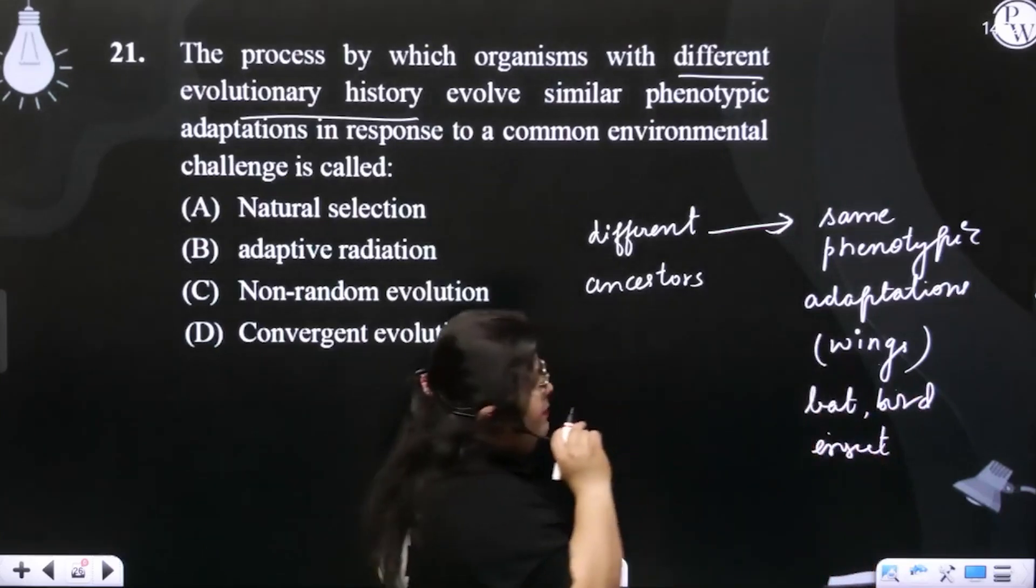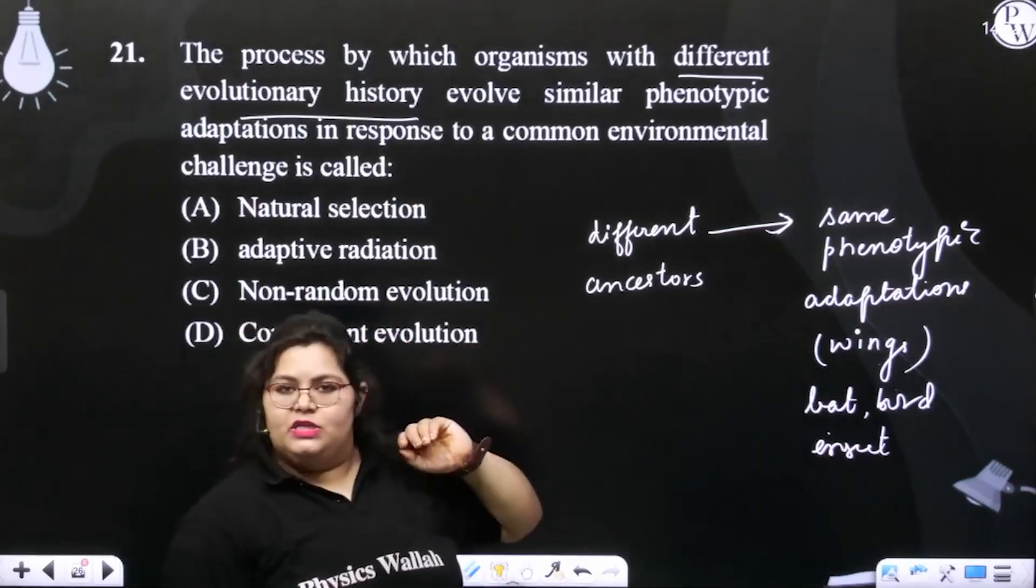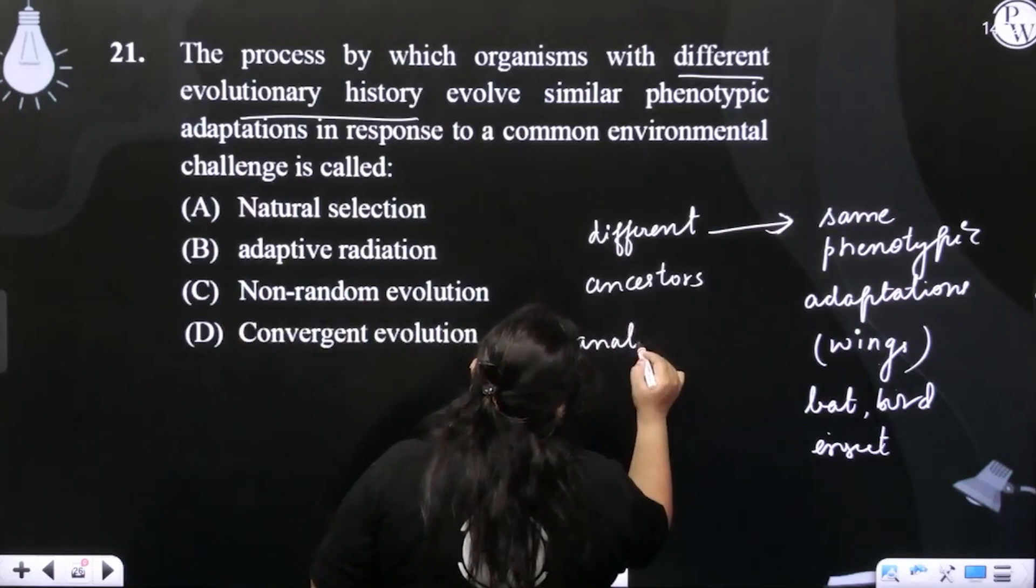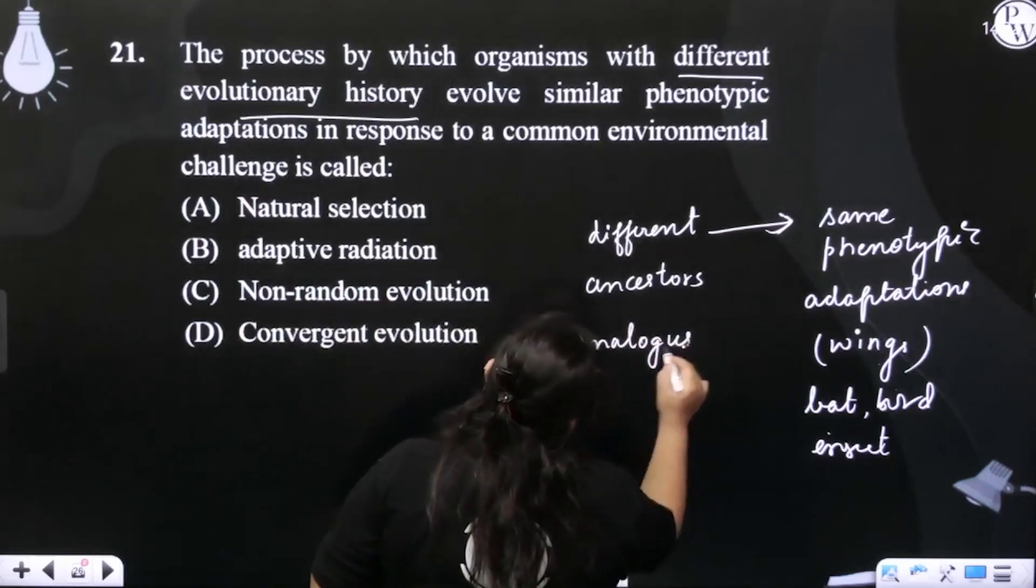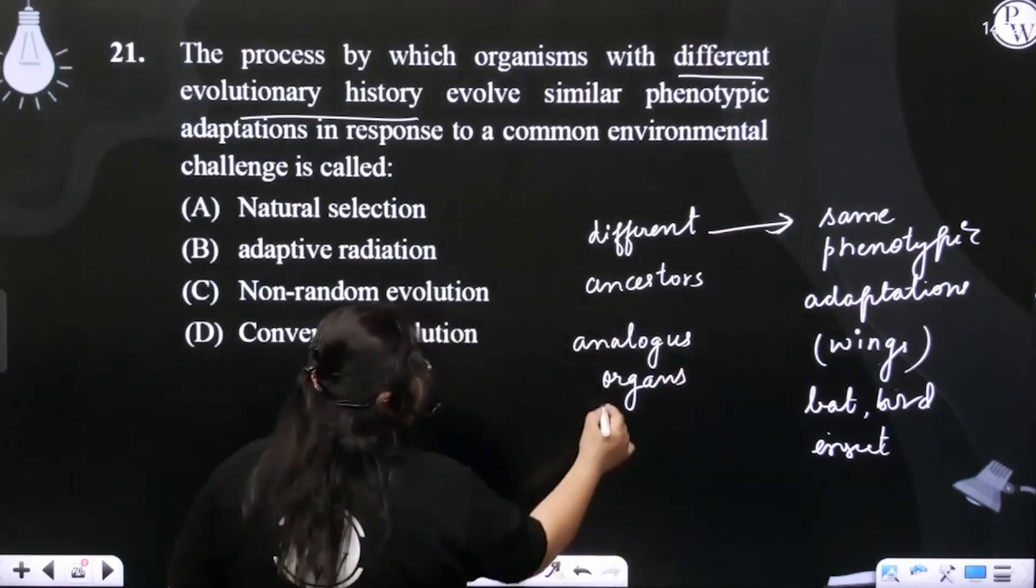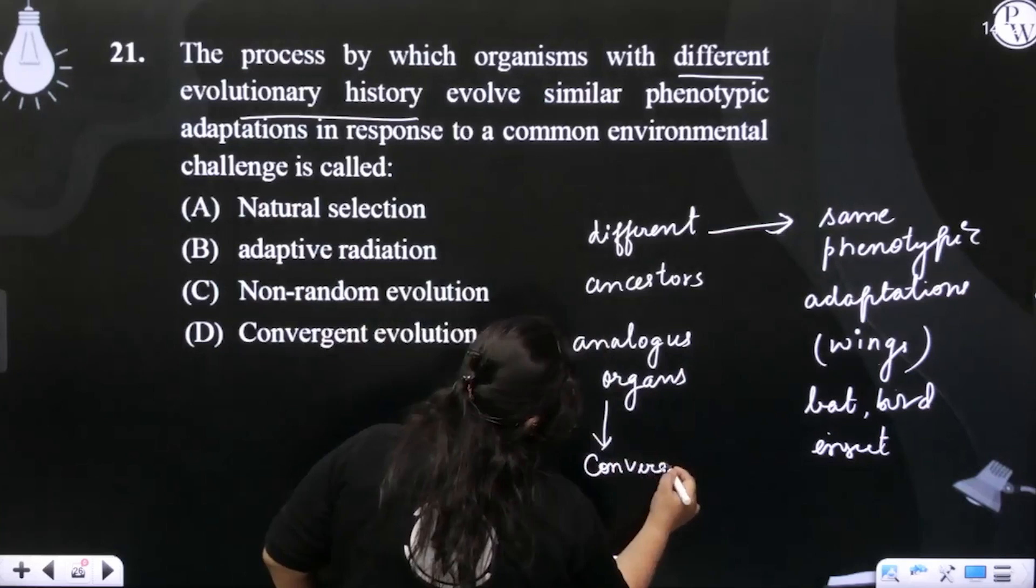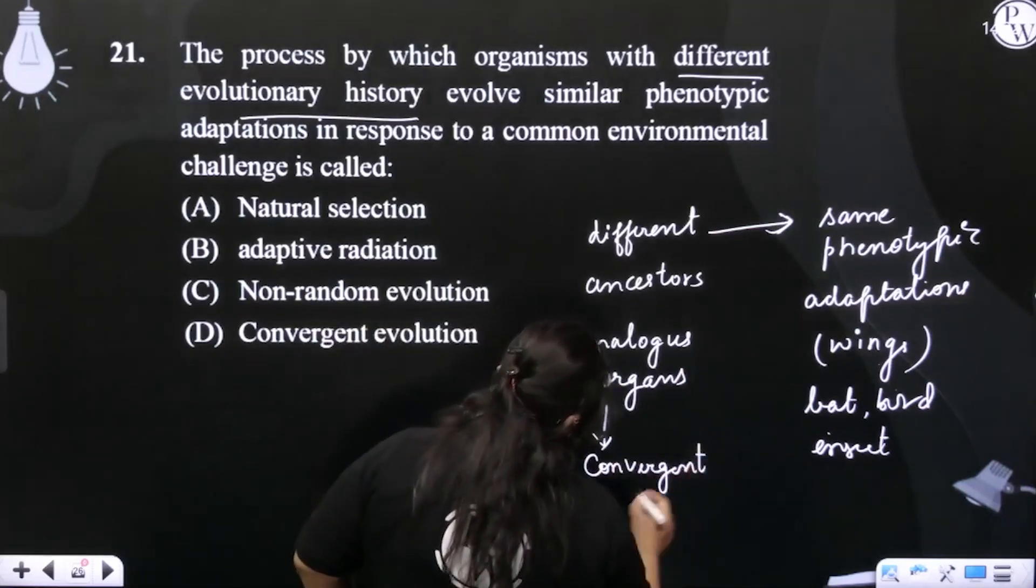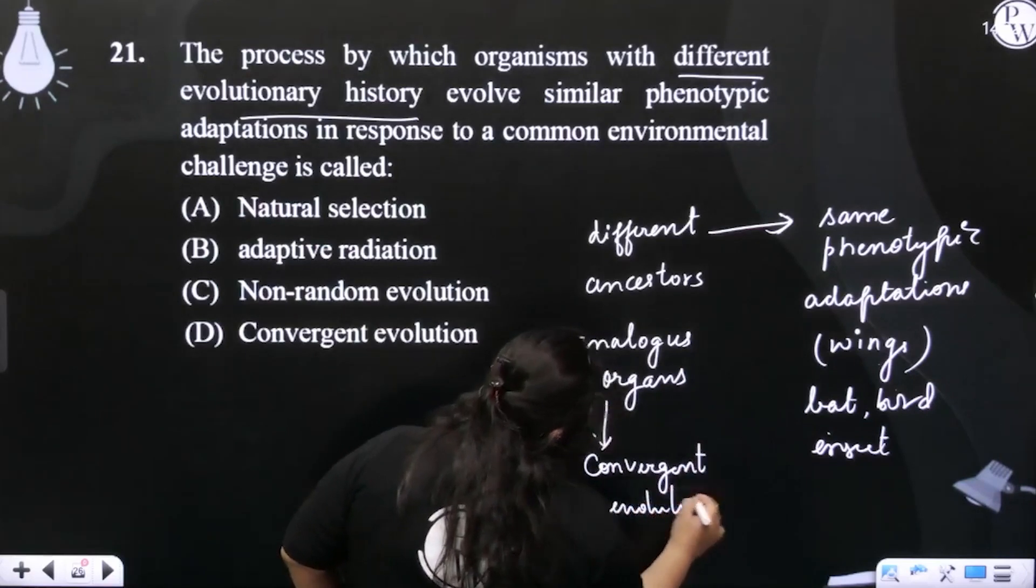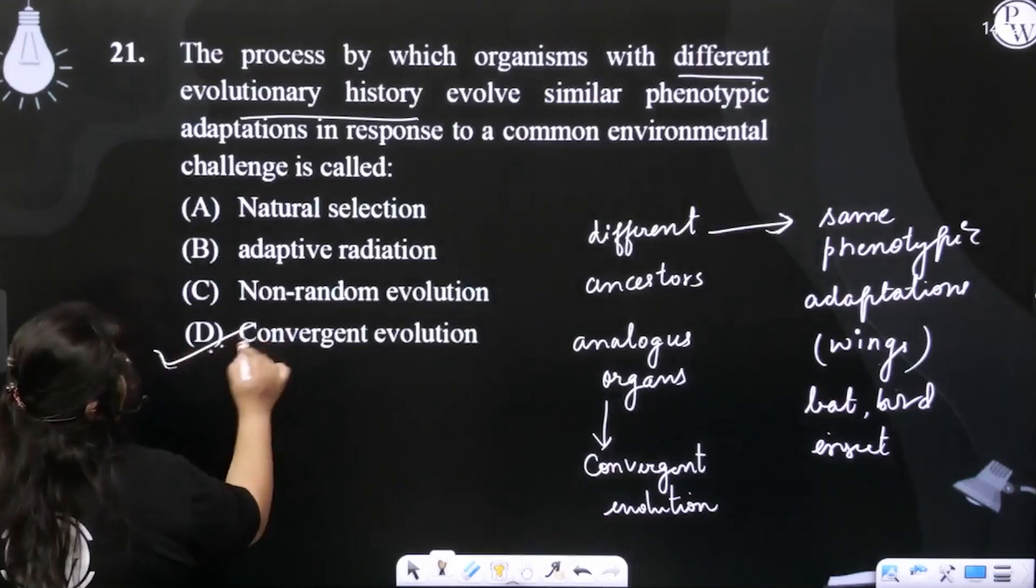These are all wings but their ancestors are different. So what kind of organs are these? We have just seen these are analogous organs. And analogous organs are the result of convergent evolution or adaptive convergence. So it is convergent evolution.